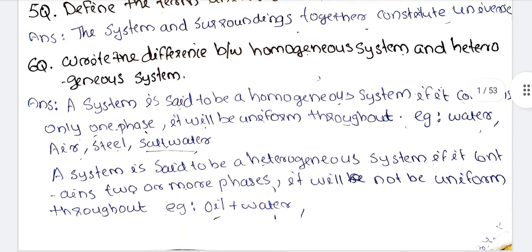What is the difference between a homogeneous system and a heterogeneous system? A system is said to be homogeneous if it contains only one phase — it will be uniform throughout. Examples include water, air, and salt water or a sugar solution.